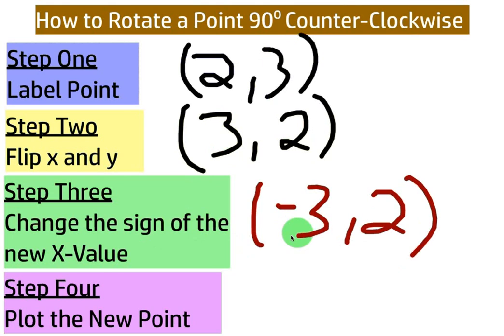And again, the reason this works, just real briefly, we're going counterclockwise. By taking that x value, after flipping it and taking that x value and making it negative, we're moving to the left instead of to the right, which would be clockwise.